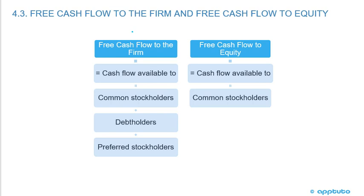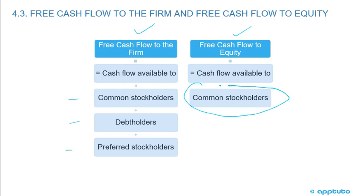On the left-hand side we're looking at free cash flow to the firm — that's the cash flow available to common stockholders, debt holders, and preferred stockholders. When we look at free cash flow to equity, we're just looking at the cash flow available to the common stockholders.